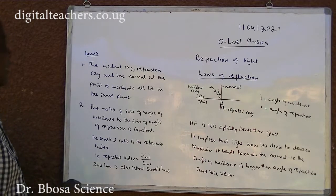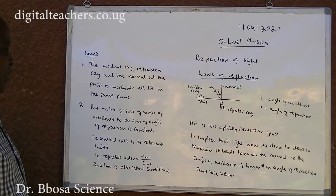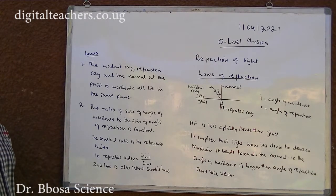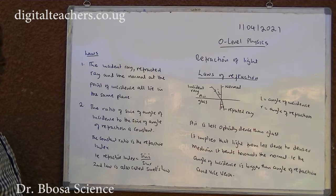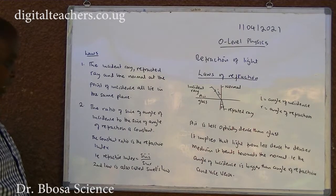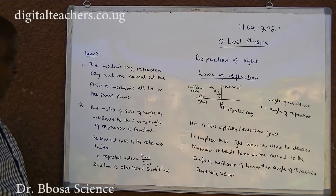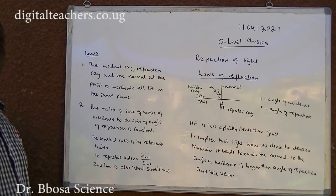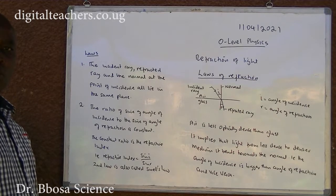The first law states that the incident ray, the refracted ray, and the normal at the point of incidence all lie in the same plane. The second law, also called Snell's law, states that the ratio of the sine of angle of incidence to the sine of angle of refraction is constant. The constant ratio is the refractive index, i.e., the refractive index of two media is equal to sine I over sine R. The second law is also called Snell's law of refraction.